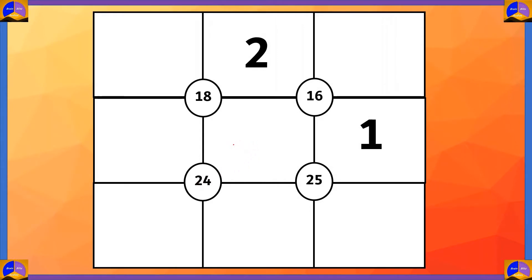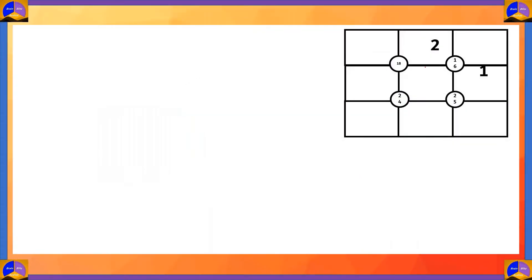So this is our puzzle. Let's name the quadrants and the cells. This will be quadrant A, quadrant B, quadrant C and quadrant D. The cells will be cell a, cell b, cell c, cell d, cell e, cell f, g, h and i. We'll also mark them here to avoid confusion: a, b, c, d, e, f, g, h, and 9.